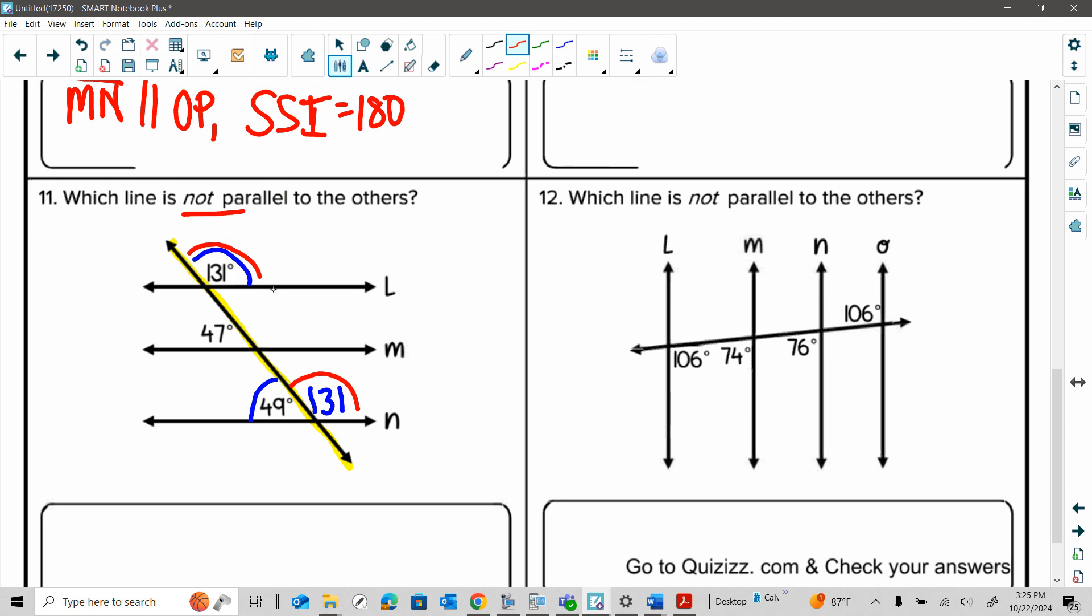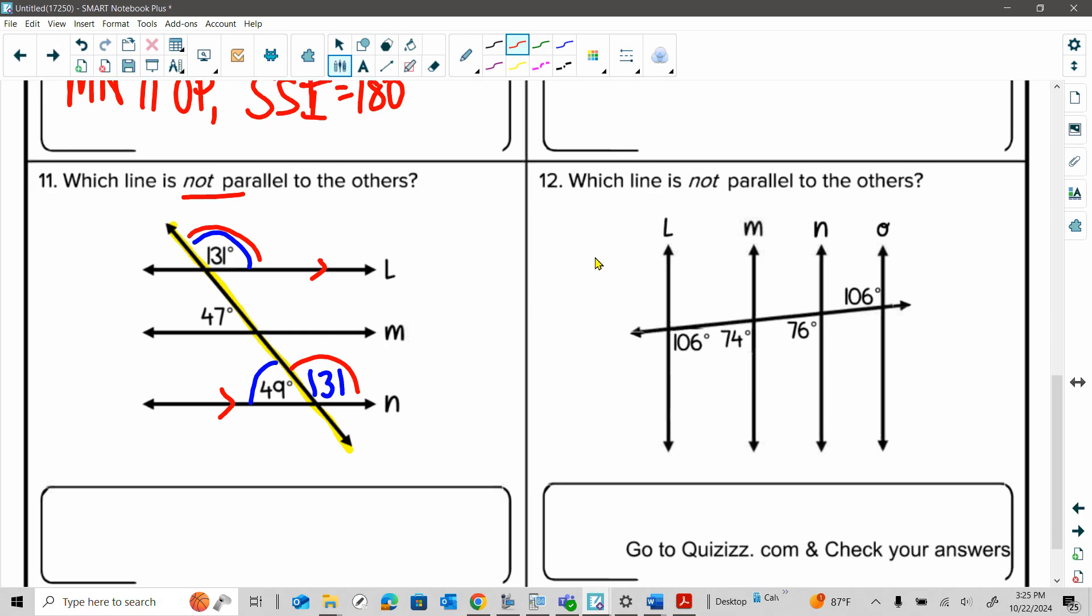So that will help you see which lines are parallel. So right now, these two lines by L and N are parallel. So let's see if you can figure out, hopefully, which line is not. And so from there, it finishes.